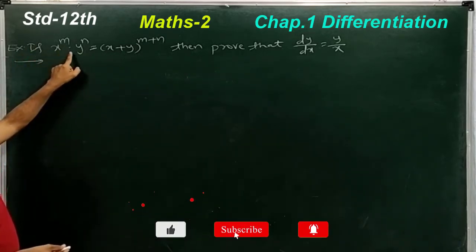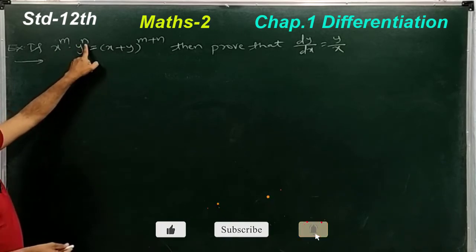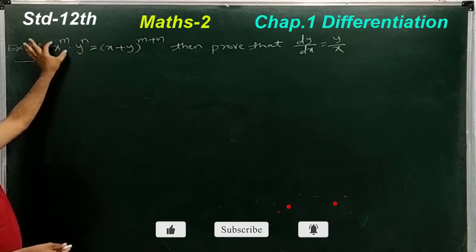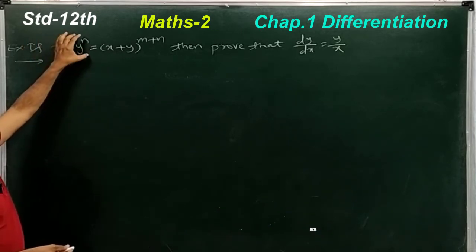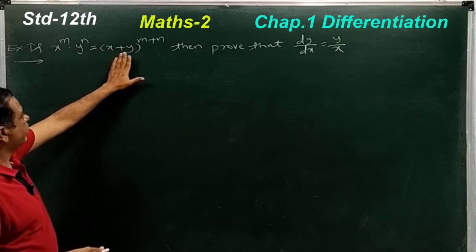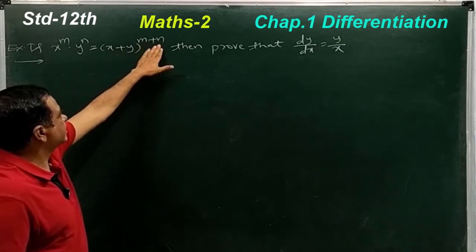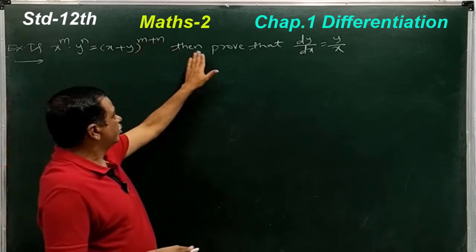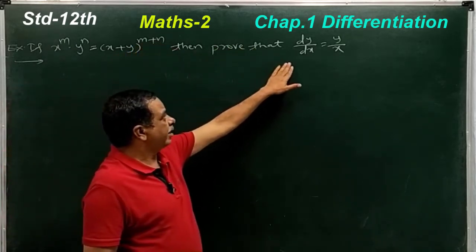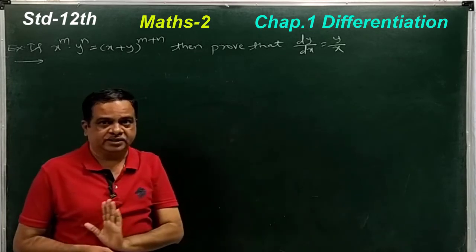If x^m · y^n — that is, x^m into y^n is equal to (x+y)^(m+n) — then prove that dy/dx is equal to y/x.